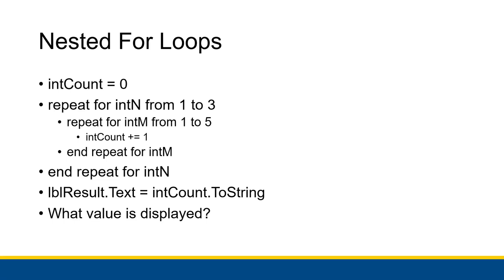I have an example of nested for loops here — just some quick pseudocode. I'm starting int count at zero, an unrelated counter, not the counters associated with the for loops — those are just there to make the for loop happen. I'm counting how many times the inner loop actually runs. Every time we run the inner for loop, there are five iterations where we increase int count by one. This happens for every iteration of the outer for loop, which iterates three times total. The question is: what value is displayed in labelResult.Text when I give it the value of int count?